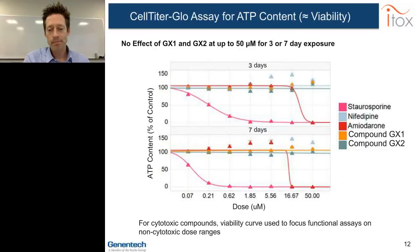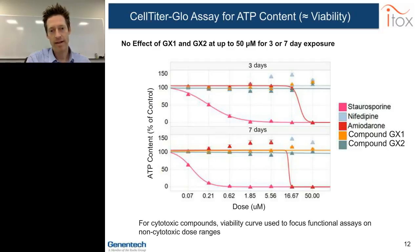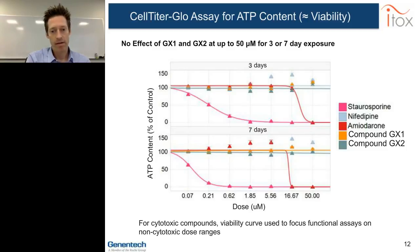Our first-pass assay is a screen for outright cytotoxicity — a chemiluminescent CellTiter-Glo assay for ATP content run after three or seven-day compound exposures. Compounds GX1 and GX2 are not cytotoxic by this measure after three or seven-day exposures, showing healthy ATP content all the way out to 50 micromolar. The positive control staurosporine causes significant ATP loss at either timepoint. So we don't see any signs of direct cytotoxicity, but when we look at functional properties, we see some marked problems.